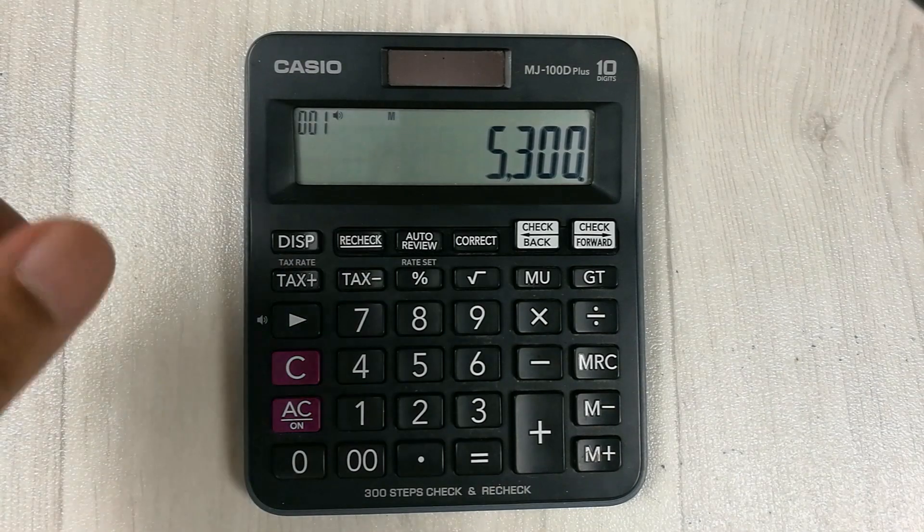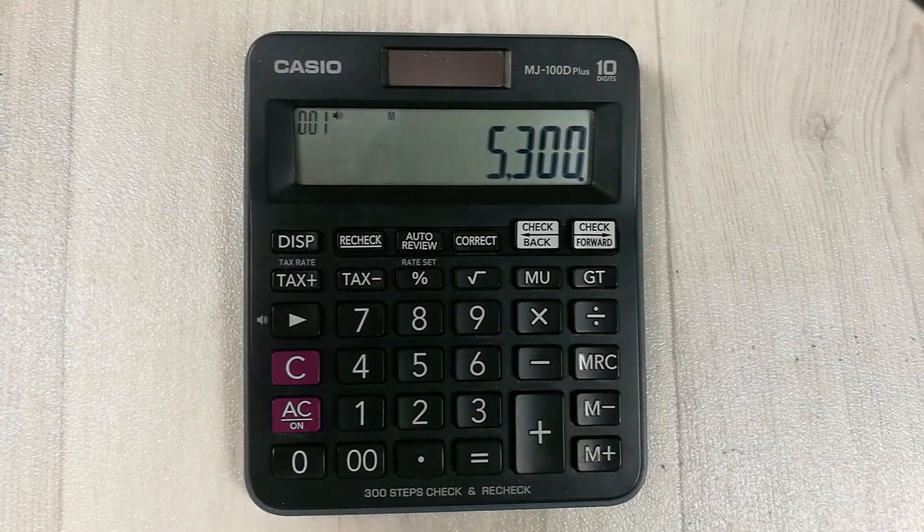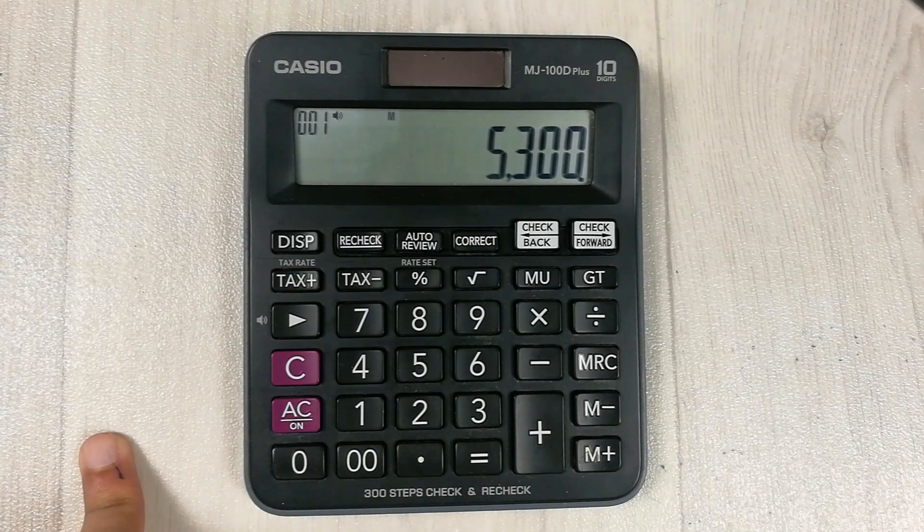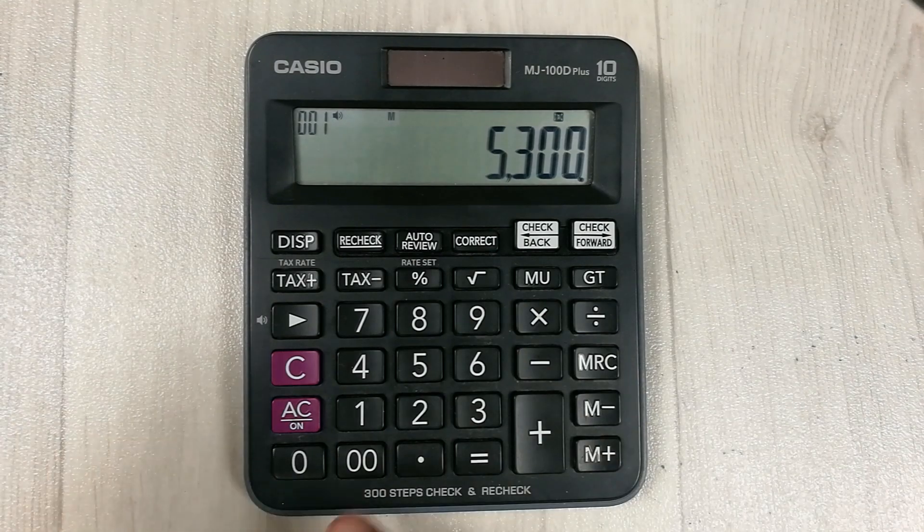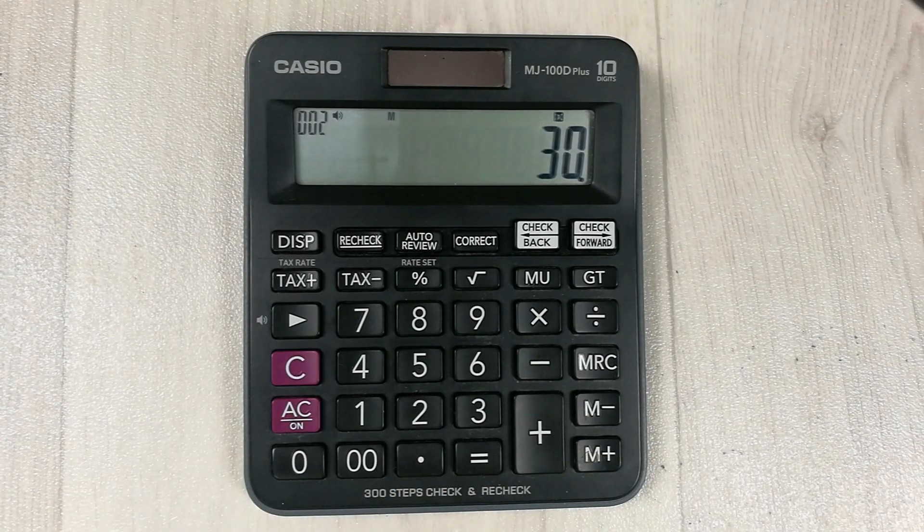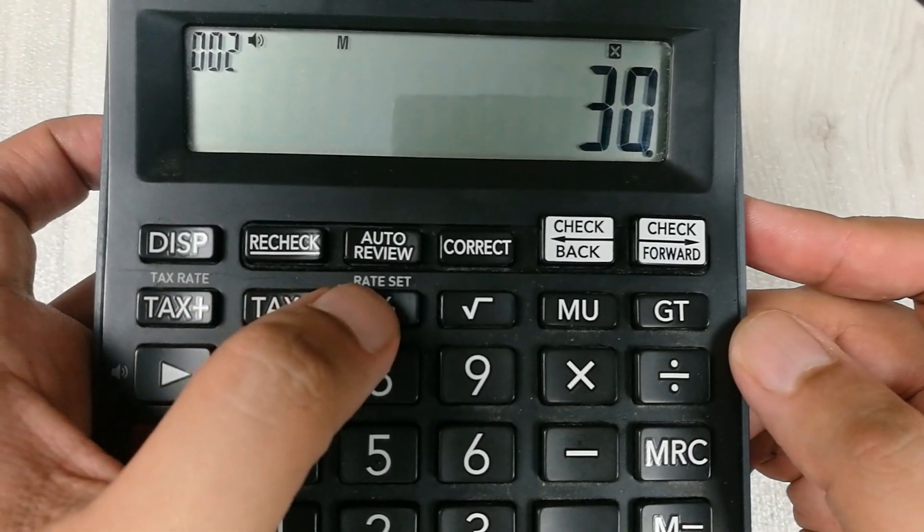And you want to calculate the 30% of this price. The first step we will do is we multiply it with 30. And the next step what we will do is we press this percentage button over here.